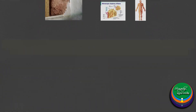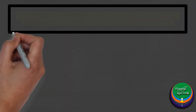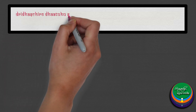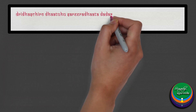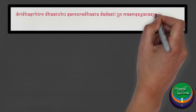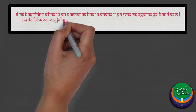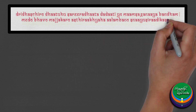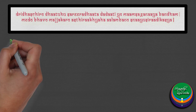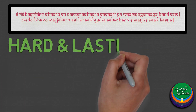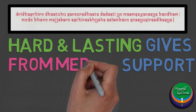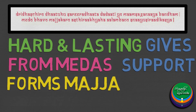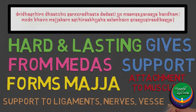Encompassing all the ideas, Prof. C. R. Agnivesh has defined Asthi as: a hard and lasting tissue giving support to the body, generated from medas and generating majja, providing attachments to mamsa, and support to nerves, vessels, etc.